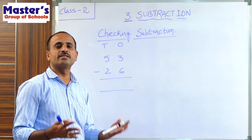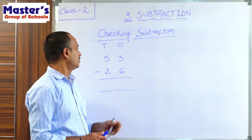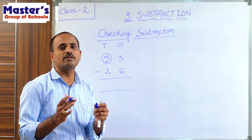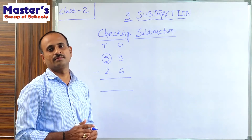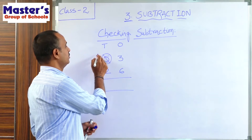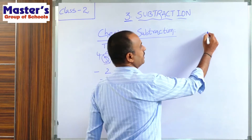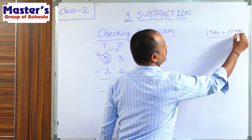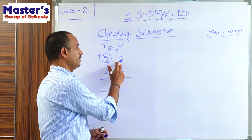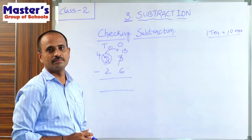Start from the 1's place. 3 and 6 are present in the 1's place. Here 3 is the smaller number and 6 is the greater number, so we cannot subtract 6 from 3. We have to get borrow from the next place, which is the 10's place. 5 is present in the 10's place, so get borrow 1 ten from 5 tens. There will be 4 tens remaining. Carry this 1 ten to the 1's place — 1 ten equals 10 ones. Already there are 3 ones, so 10 ones added to 3 ones gives 13 ones.